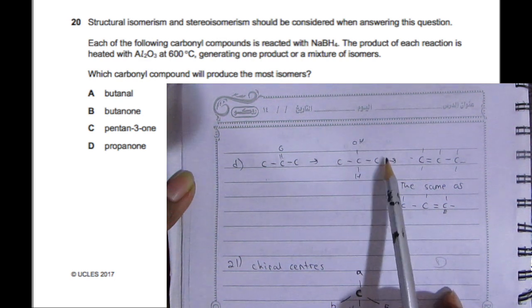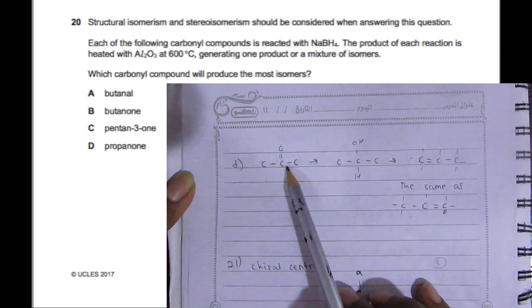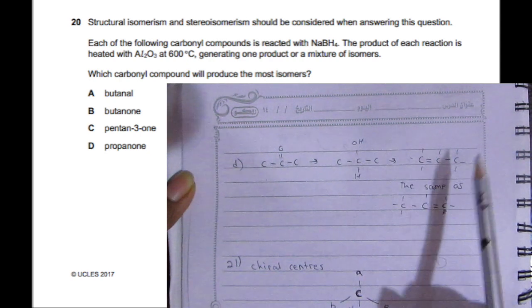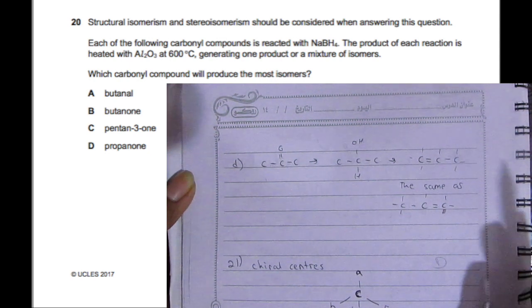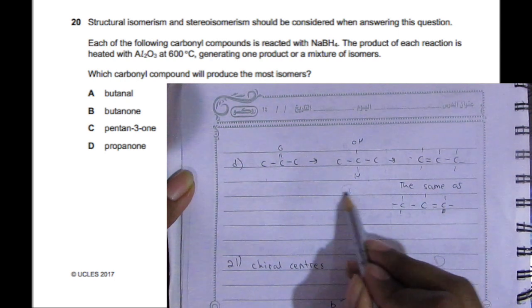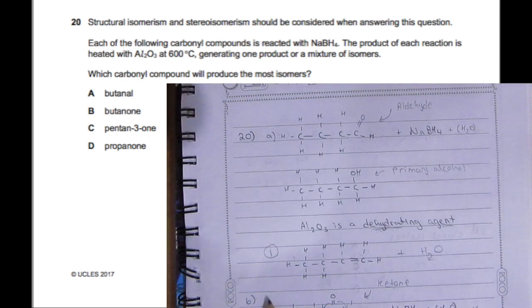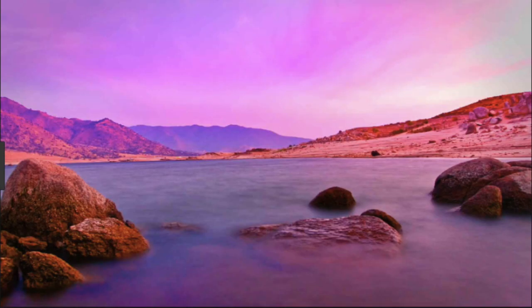Part D: You have propan-1-one, or just propanone, which is also a ketone. Ketones turn into secondary alcohols. If you draw it out, it only has one option because it's the same thing flipped, just like option C. B would be the answer because it will produce the most isomers. Thank you.